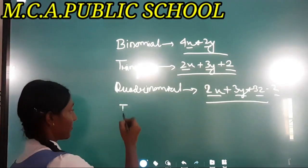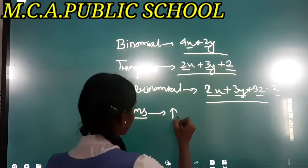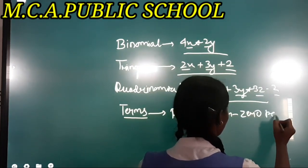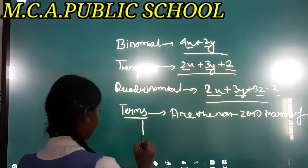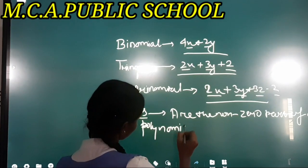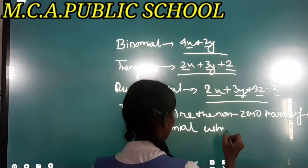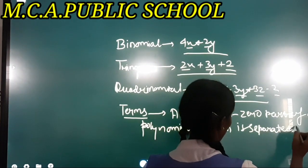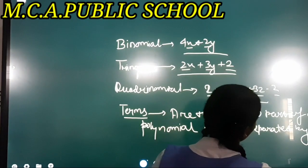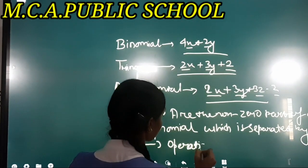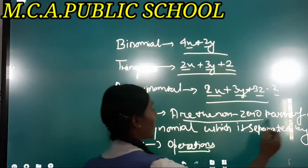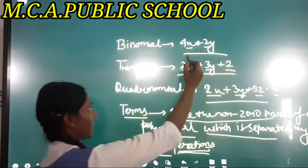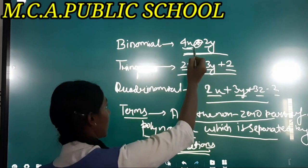Terms are the non-zero parts of a polynomial which are separated by plus and minus operations. For example, in 4x + 2y, the plus operation separates the two terms, giving us term 1 and term 2.